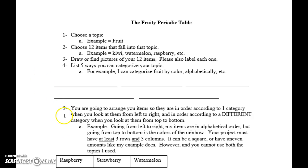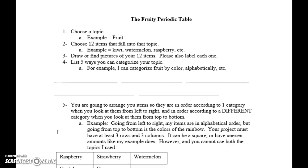Okay, so you have five different ways that you can arrange something. Next step, you are going to arrange your items so they are in order according to one category when you look at them from left to right, and in order according to a different category when you look at them from top to bottom. For example, going left to right, my items are in alphabetical order, but going top to bottom is the colors of the rainbow. Your project must have at least three rows and three columns. It can be square or have uneven amounts like my example does. However, you cannot use both of these topics that I did. So, you cannot do color, you cannot do alphabetizing.